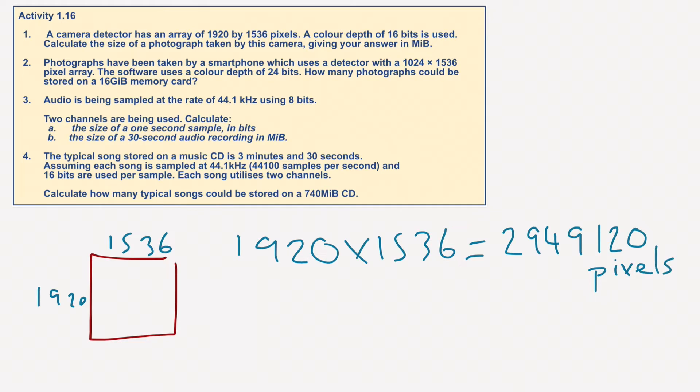1920 multiplied by 1536 equals 2,949,120 pixels. So we've got all these pixels, so let's put this down here, 2,949,120 pixels, and we've got to multiply that basically by 16. Lots of multiplications, lots of absolutely massive numbers. So we're going to multiply basically the area by the color depth.